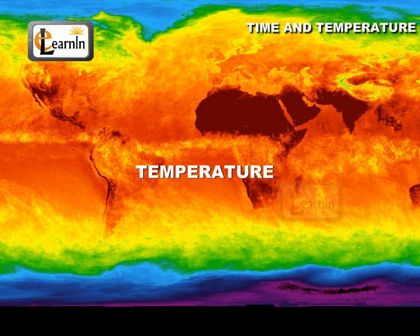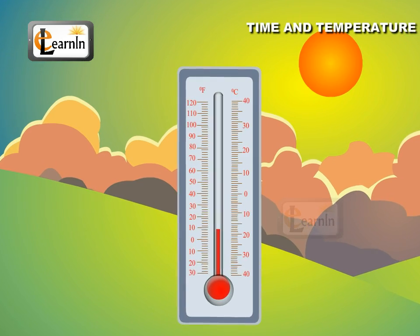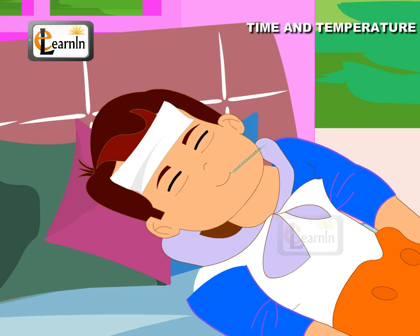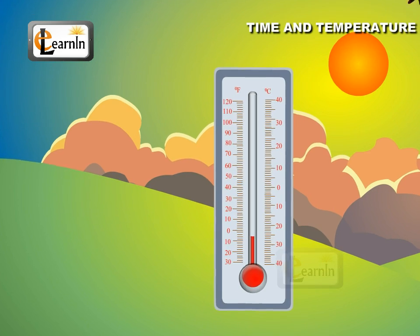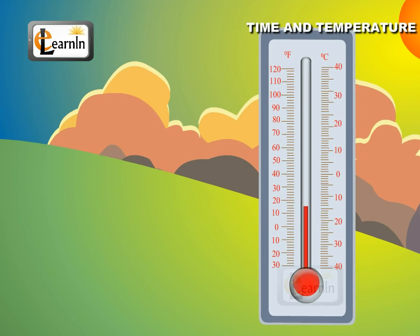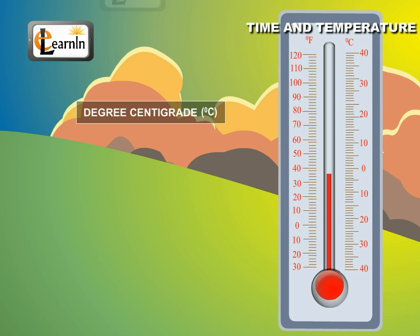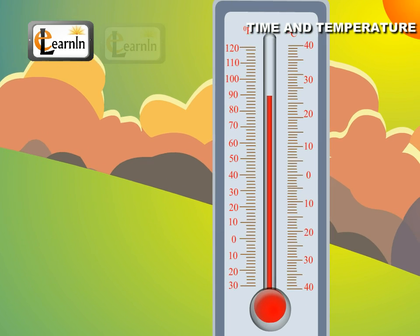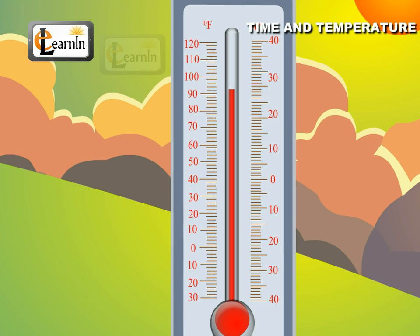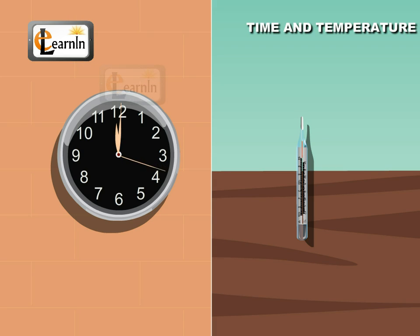Temperature. Now let's look at temperature. Temperature is a measure of the heat of a body. It's generally expressed in three units, namely degrees centigrade, Kelvin, and degrees Fahrenheit. They are all used to represent the same range of temperature. These are the units of measurement of time and temperature.